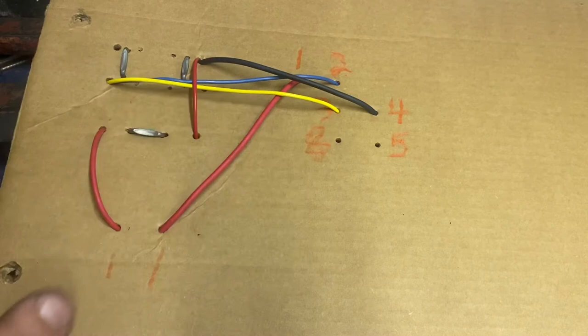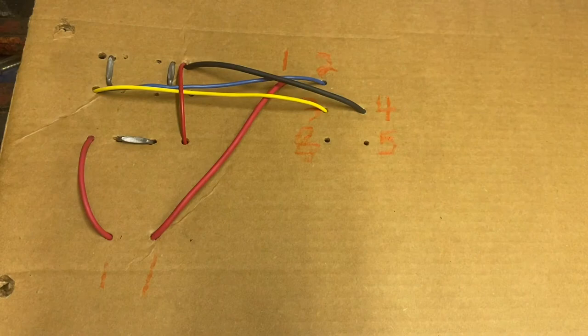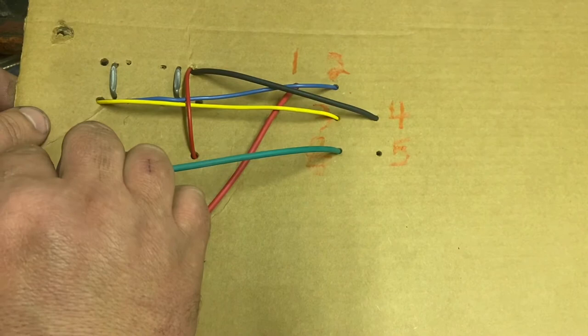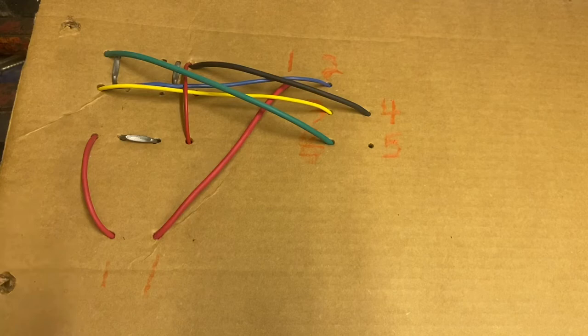And we'll run a jumper from it up to the opposite here. Follow me so far. Now we'll take, let me find a different color here, let's use this guy if it'll reach. Okay, so now when it switched, power is always going to four. So if you switch it on right now you'd have power to one, power to four.